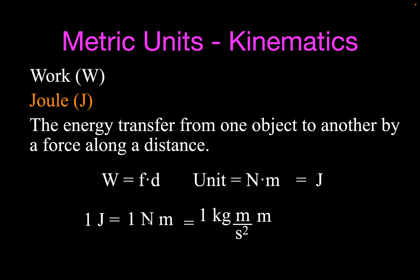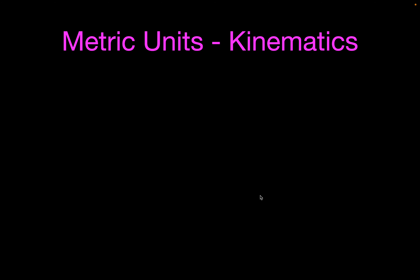Inside the newton there's kilogram meter per second squared, and there's also a meter from the distance. Multiplying those together, we get kilogram meter squared per second squared. So a joule is a newton meter, or equivalently a kilogram meter squared per second squared. We don't usually write all of that out — we just write the joule. But it's interesting to see what's inside these units because they actually have some meaning to them.